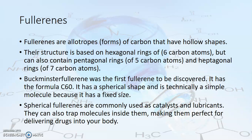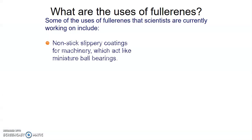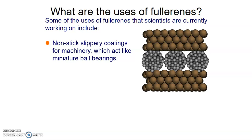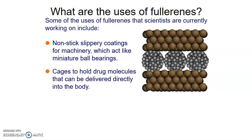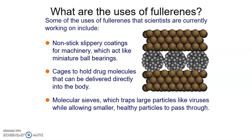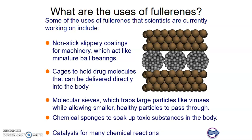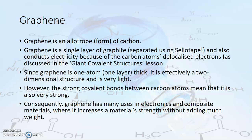Some of the uses: fullerenes can be used to make non-stick slippery coatings on machinery, because these tiny molecules act as miniature ball bearings allowing surfaces to slip over each other more easily. They can be used as a lubricant, they can be used to deliver drug molecules directly into the human body to the actual sites where they need to be used, and they can be used as molecular sieves to trap certain particles and let others pass through. They can also be used to soak up toxic substances in the body and as catalysts for certain chemical reactions.